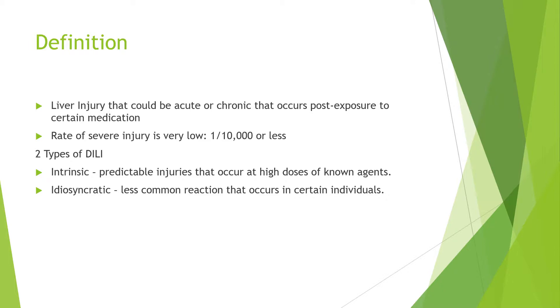The definition of drug-induced liver disease is this. Drug-induced liver injury can either be acute, lasting for less than six months, or chronic, lasting for more than six months. It usually occurs when a patient is taking certain medications that are known to cause DILI. There are two types: the first is intrinsic. This type of injury is usually predictable and occurs at high doses of known agents — for example, acetaminophen. That's why there is a limit of four thousand milligrams per day.